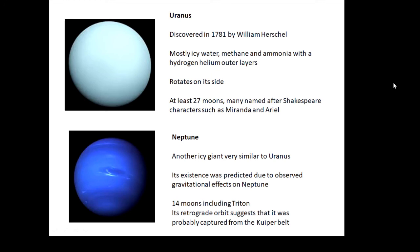Neptune—another icy giant very similar to Uranus. Interestingly its existence was predicted due to gravitational effects on Uranus. There was a little bit of a wobble in the orbit of Uranus and somebody suggested that that was possibly due to another large planet, and then they found it with the telescope.